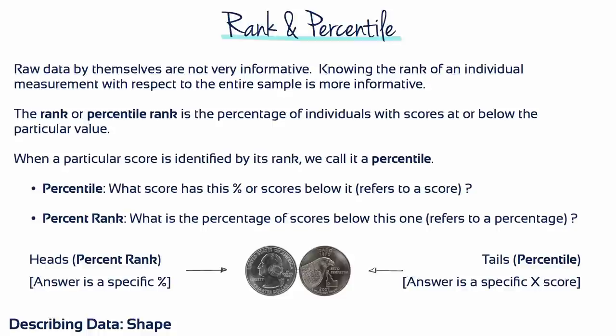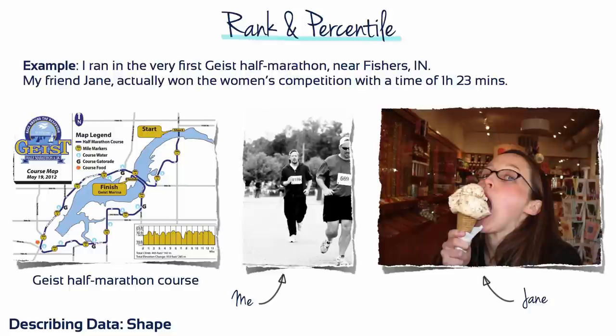That sounds kind of confusing, right? Let me try and clarify. Percent rank and percentile are like two sides of the same coin. They're two descriptions of the same thing, which is the exact position of an individual score within the distribution.